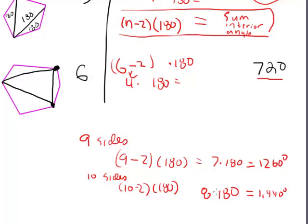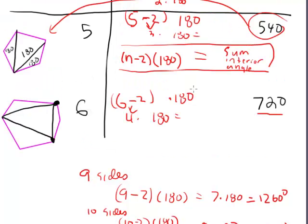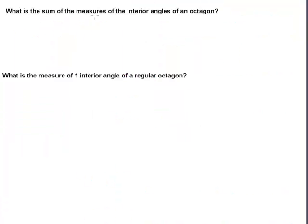So that's the general formula for the sum of the interior angles of a convex polygon. Now you can answer a question like: what is the sum of the measures of the interior angles of an octagon? An octagon has eight sides, so n equals eight. Plug it into the formula: n minus two times 180, or six times 180, which gives you 1080 degrees.